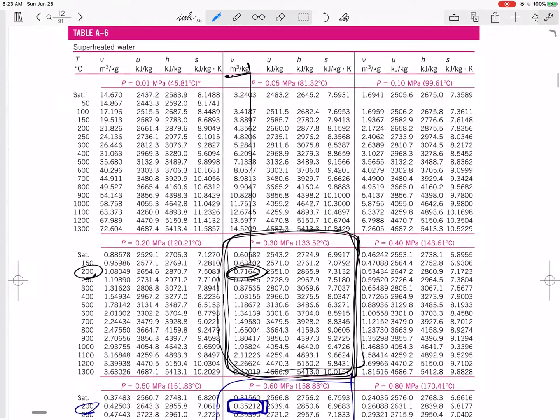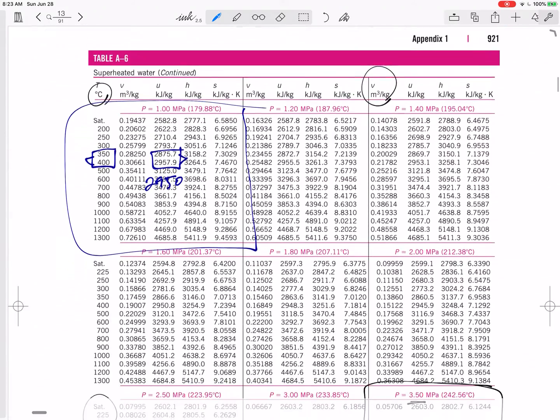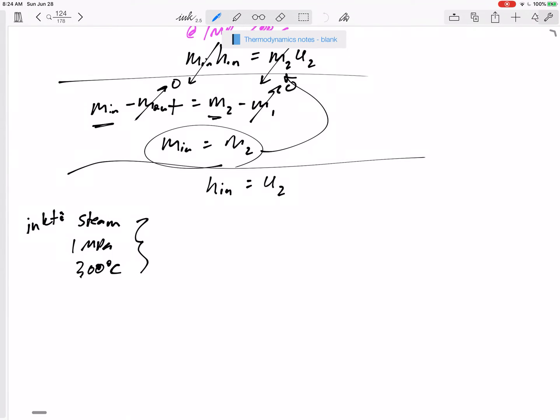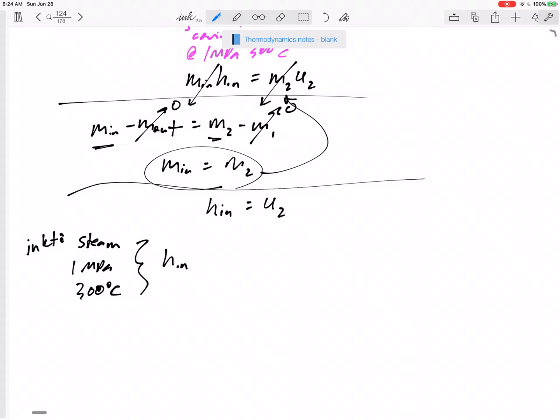So now that I know it is superheated, a pressure of 1 MPa right here, a pressure of 1 MPa and a temperature of 300, my H is 3051.6, 3051.6 kilojoules per kilogram. So let's go back to our notes. H of the inlet is 3051.6 kilojoules per kilogram.